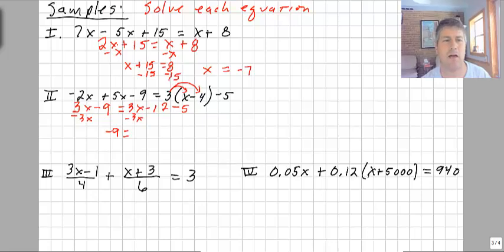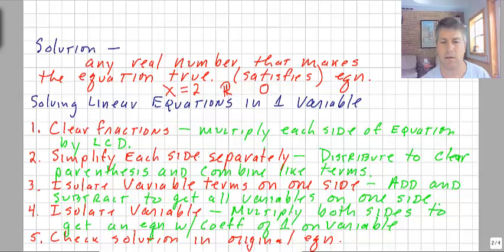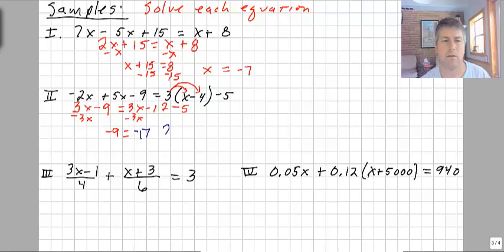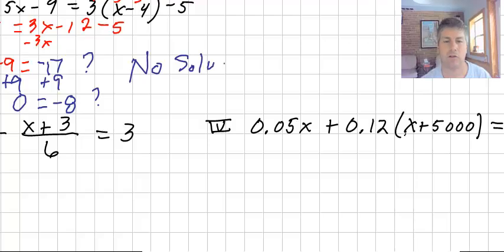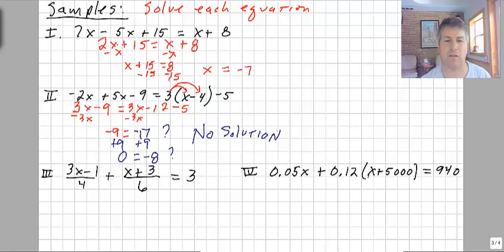And I get negative 9 equals negative 12 minus 5. This is negative 17. So negative 9 equals negative 17. That doesn't seem to make sense to me. I'm going to add 9 to both sides and get 0 equals negative 8. 0 doesn't equal negative 8 either. So this particular problem, there are no solutions. There's no values for x that satisfy that equation.